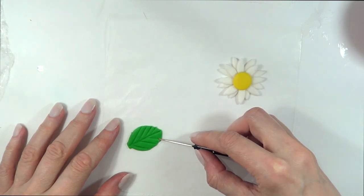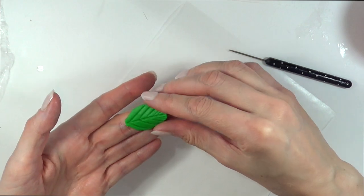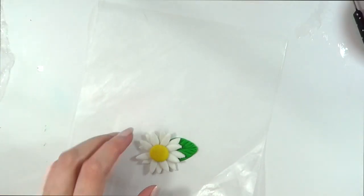You can use a toothpick as well, but I find this tool to be much handier because you can wash it and use it later. And I'm just going to be taking some water and gluing that leaf on the bottom of my daisy.